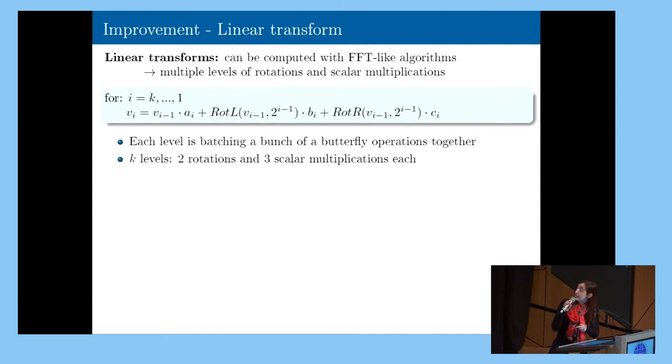So in the slide, as you can see in the blue box, I represented this linear transformation. We have K levels. And in every level, we have two rotations, a rotation on the left, a rotation on the right, and three scalar multiplications of the ciphertext times a_i, b_i, c_i.